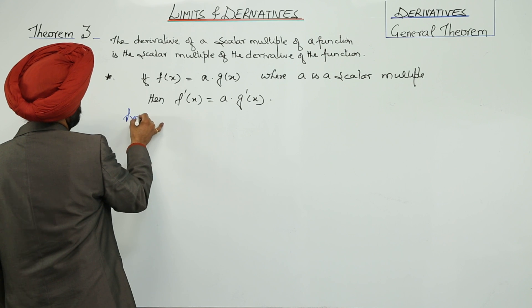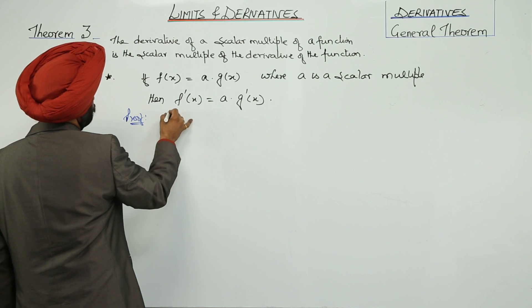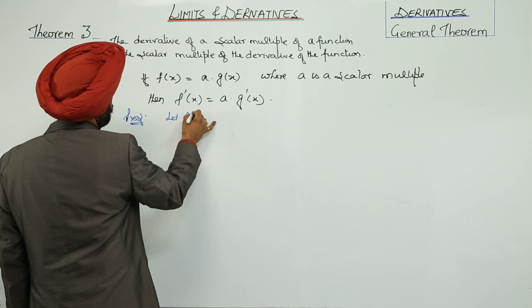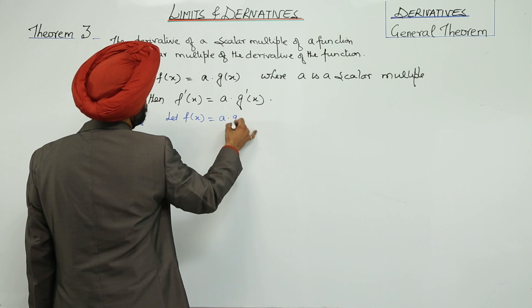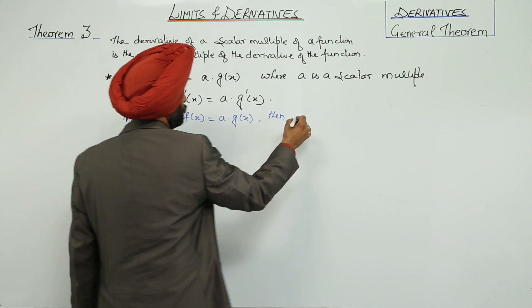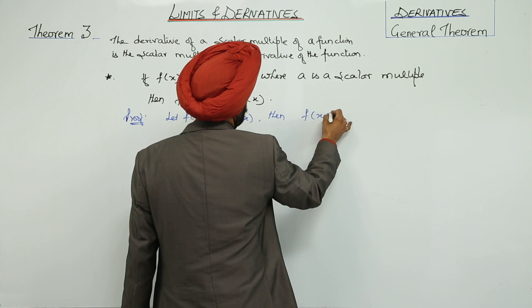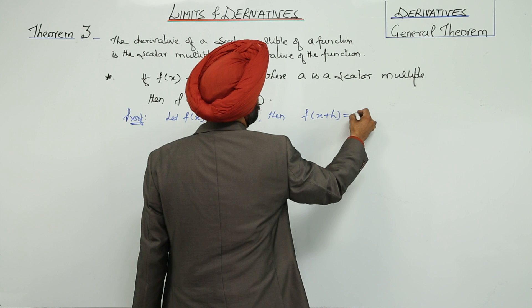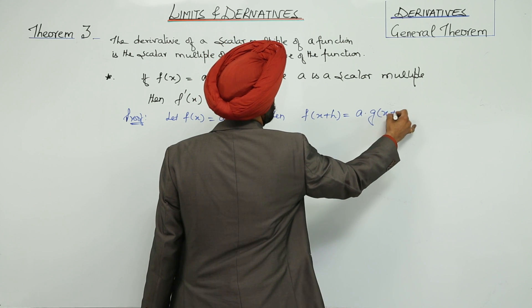Proof: Let f(x) equal a times g(x). Then f(x+h) equals a times g(x+h).